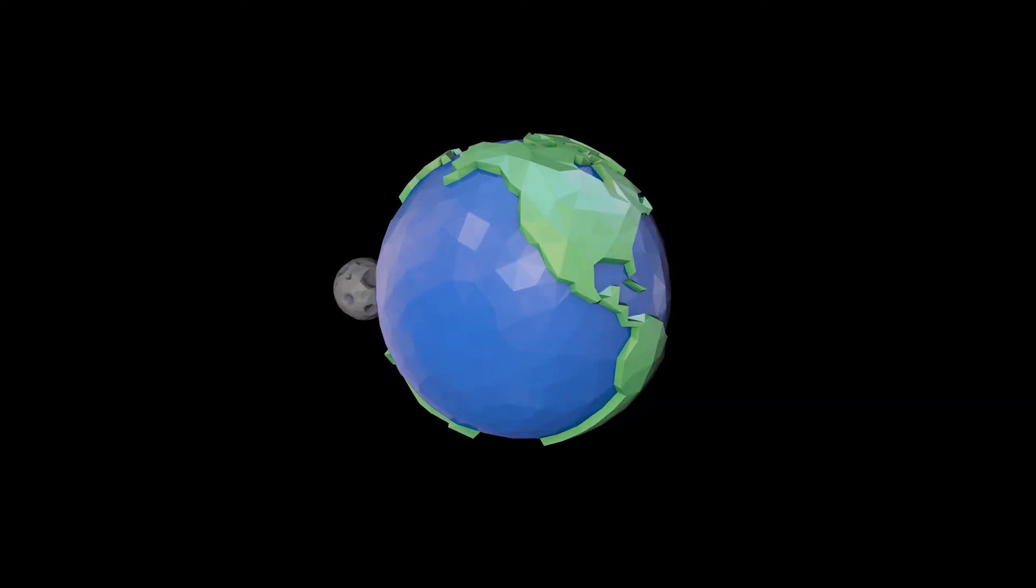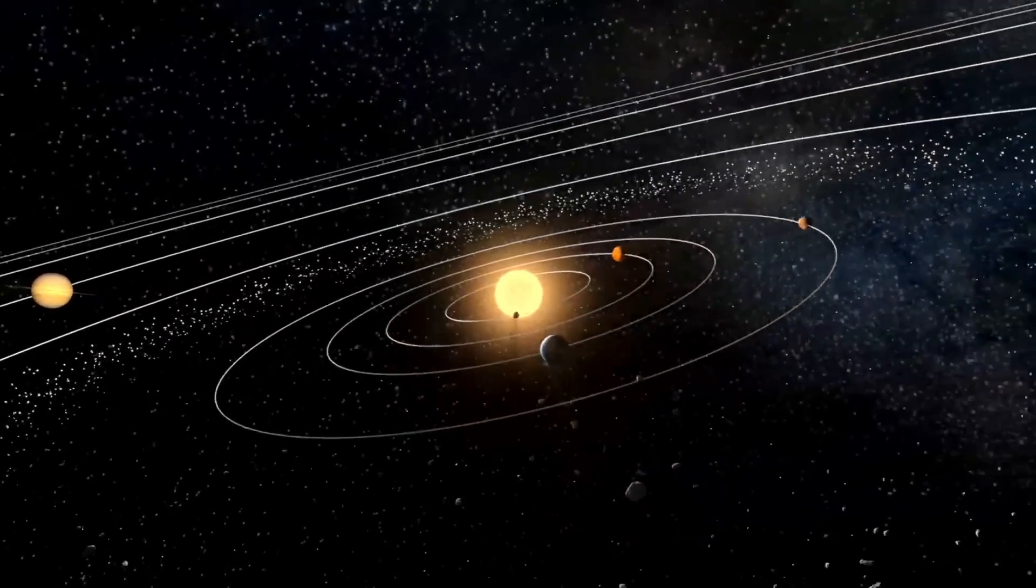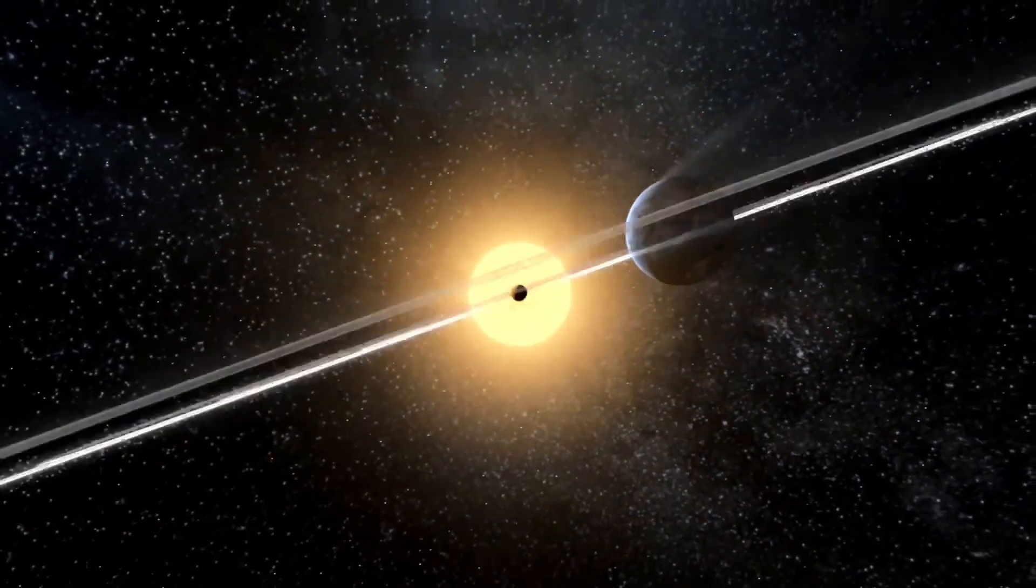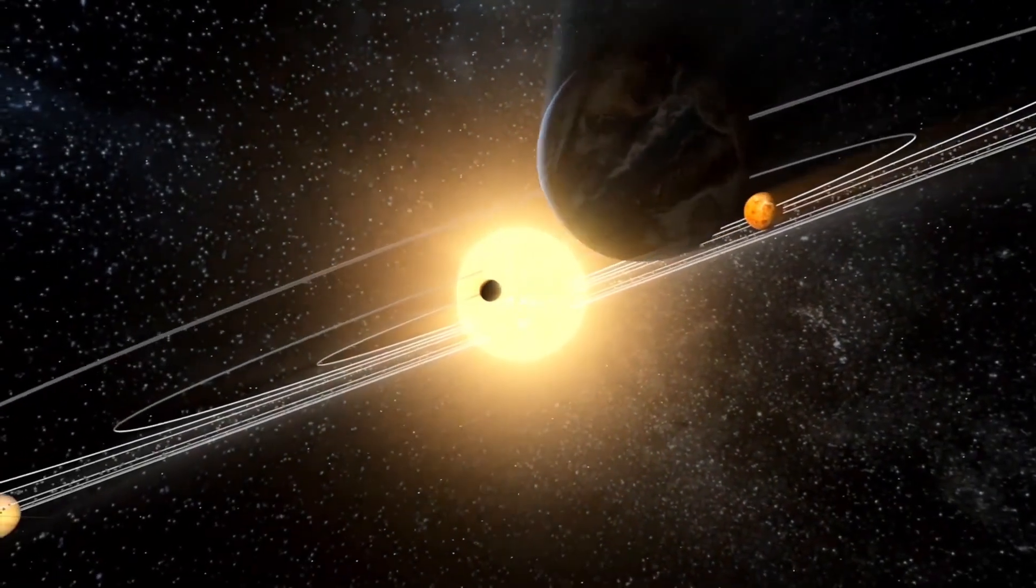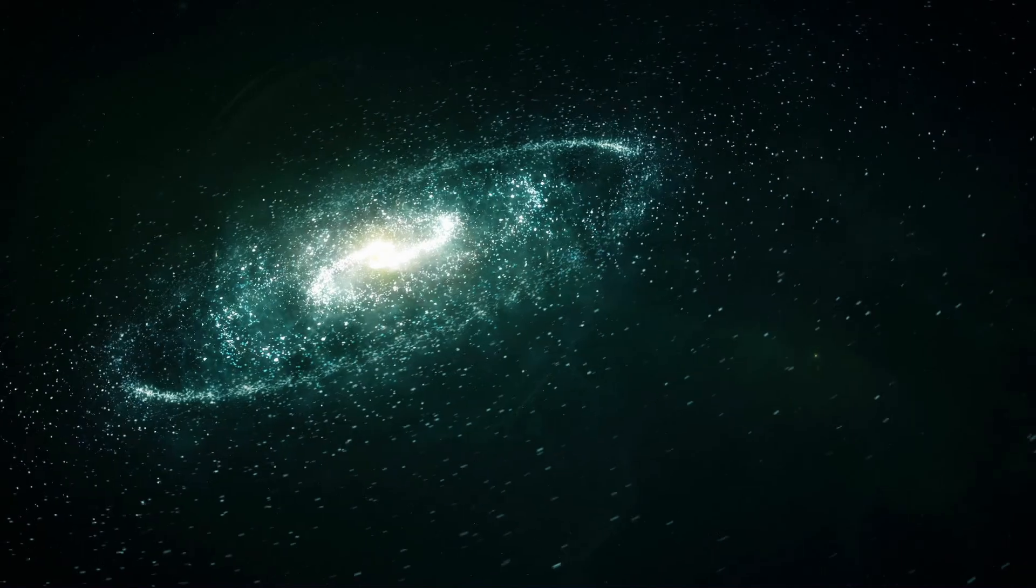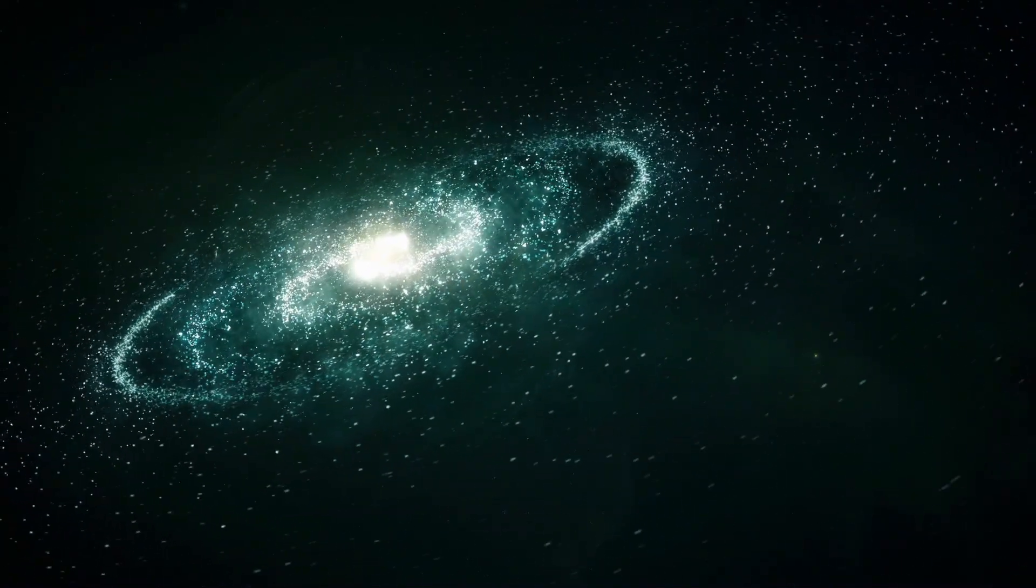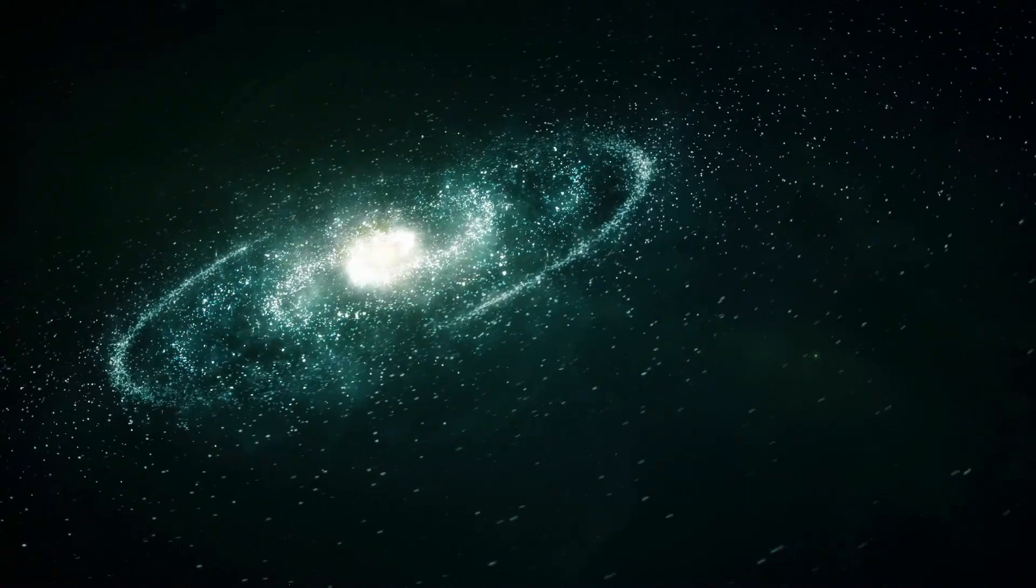This concept of centripetal and centrifugal forces applies to all the celestial bodies in space, and this is why our solar system has such precise movement of planets around the Sun. When the scientists observed the galaxies located billions of years away, they observed the same phenomenon in those galaxies.